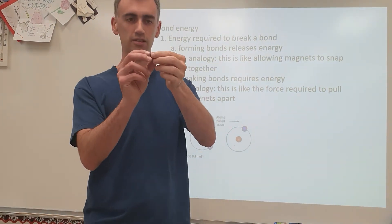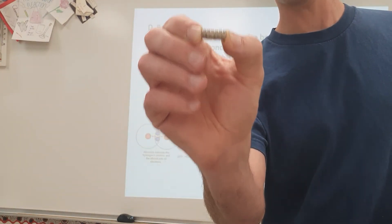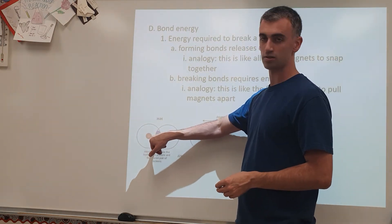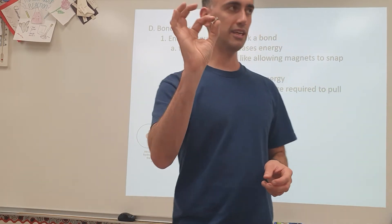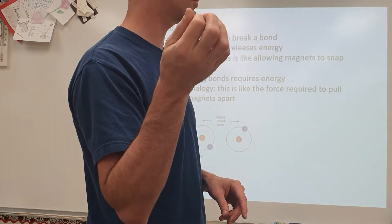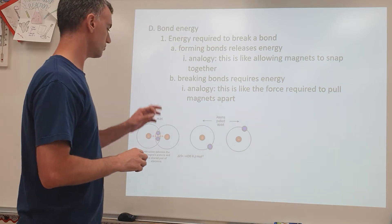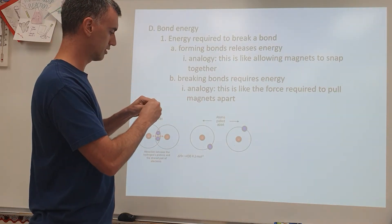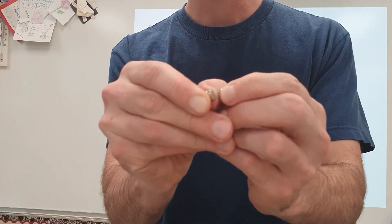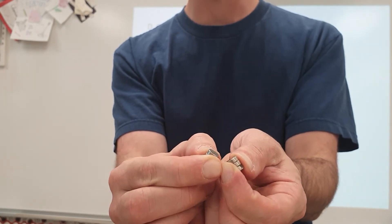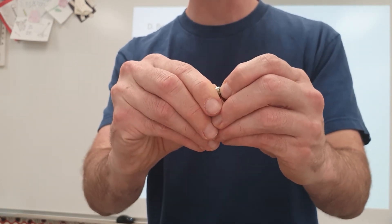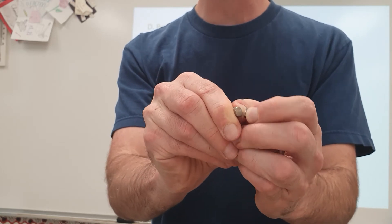We can use magnets as an analogy. These little neodymium magnets can be sort of like a chemical bond, because chemical bonds are atoms sticking together because they're attracted to each other's oppositely charged pieces — just like these things stick together because of opposite magnetic poles. Neodymium magnets take a bit of force to pull apart; they are strongly attracted to each other, so you have to pull kind of hard to bring them apart.